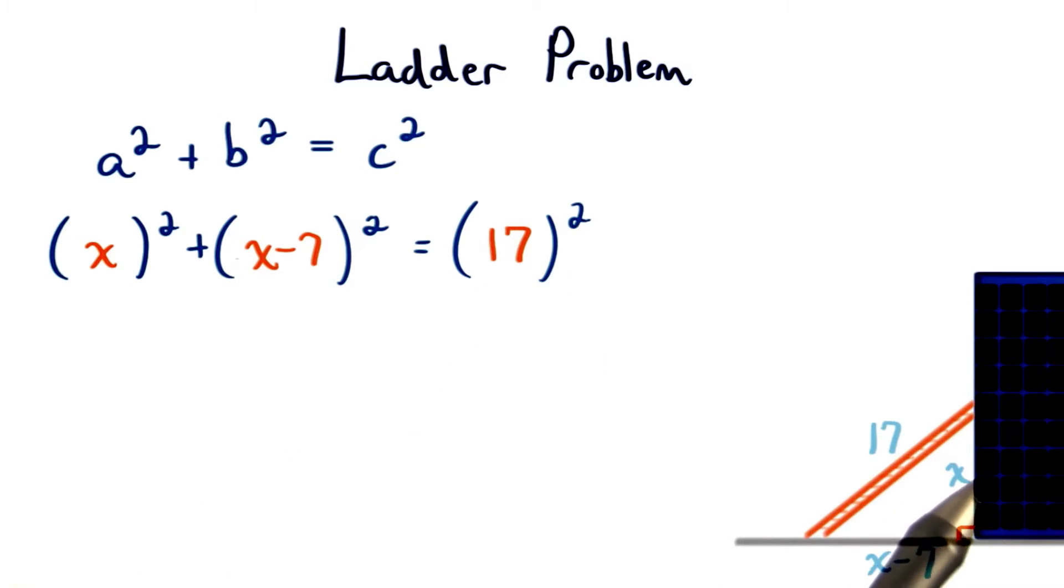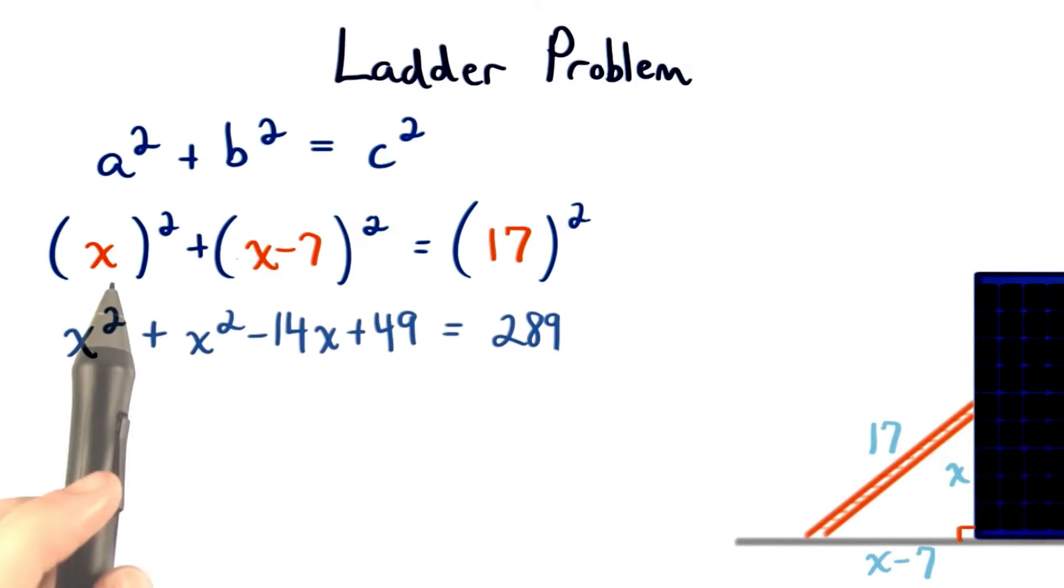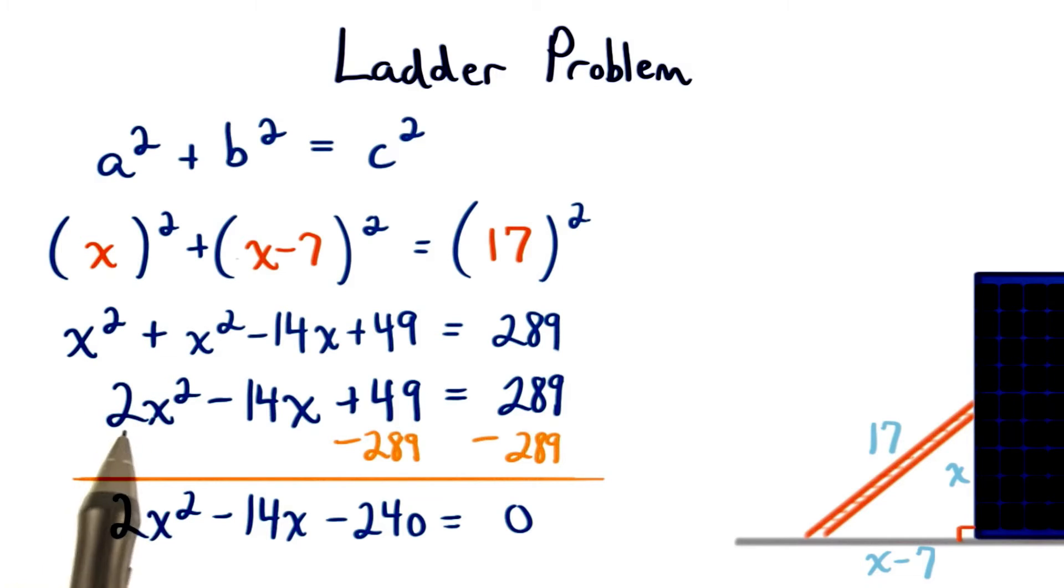We'll square these legs and take the sum of the squares to get the square of the hypotenuse. Squaring these expressions, we get this equation. We'll add the like terms together here to get 2x squared minus 14x plus 49 equals 289.